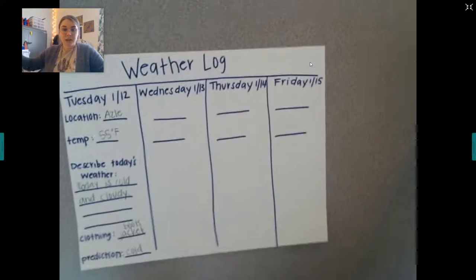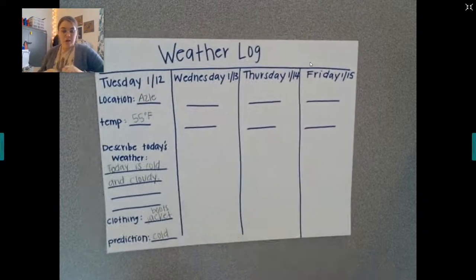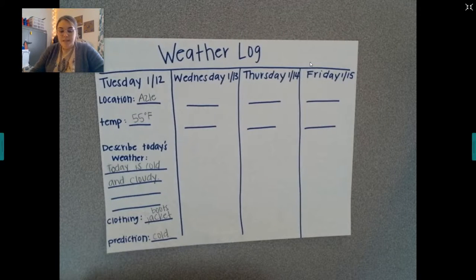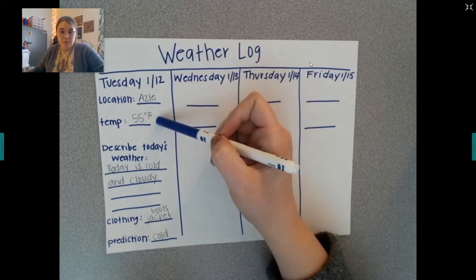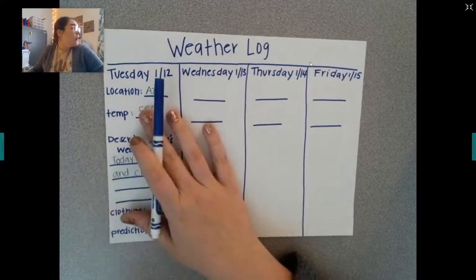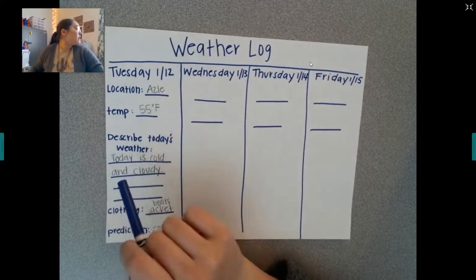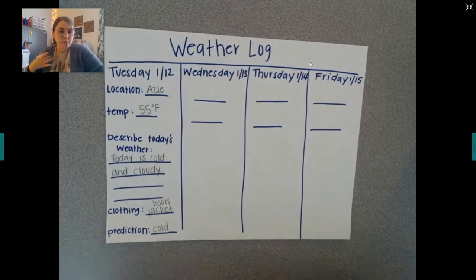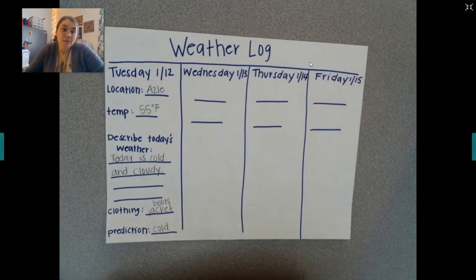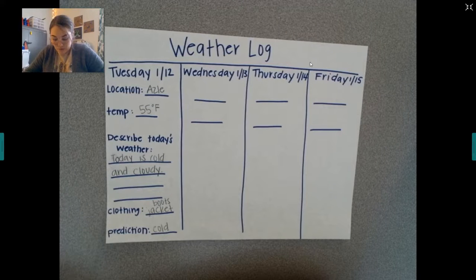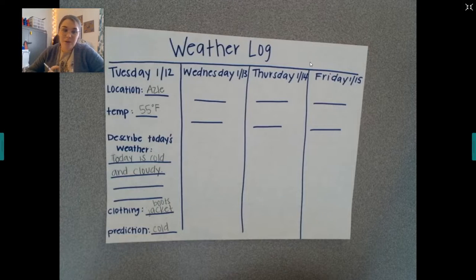Let's take a look at our weather log for the week. We did yesterday, which was Tuesday, in Azle. Our temperature was 55. It was cold and cloudy on Tuesday, and we should wear boots or maybe a jacket. Our prediction was that today it's going to be cold. When I woke up this morning it was pretty cold — remember, I record these a day in advance.